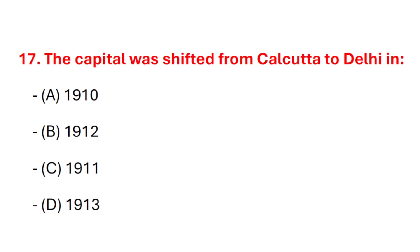Question 17. The capital was shifted from Kolkata to Delhi in? Correct answer is option C: 1911.